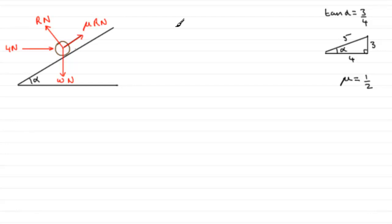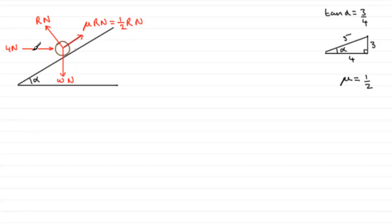Since mu equals one half, I'll write the friction force as one half R Newtons. Now, whenever I have a force pushing into an object, I prefer to push it through the particle out the other side. So this 4 Newton force I'm going to mark as 4 Newtons acting out the other side, and do away with the original arrow. I think it makes the problem a lot easier to solve.